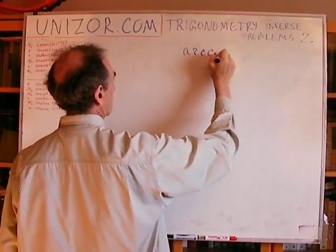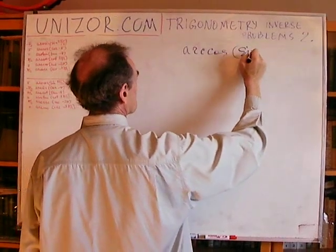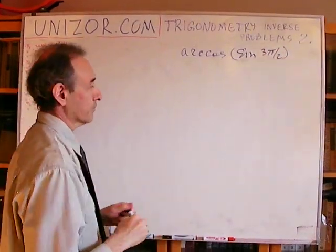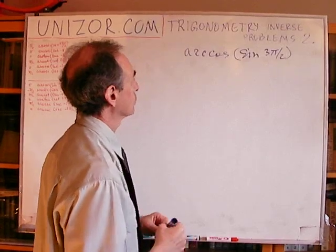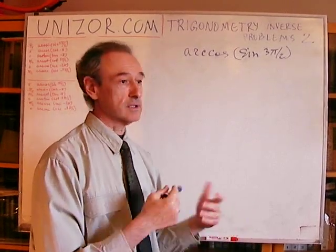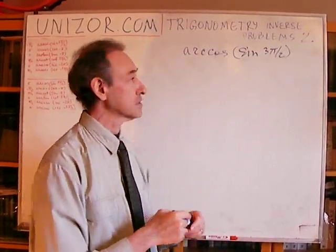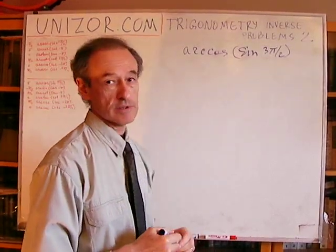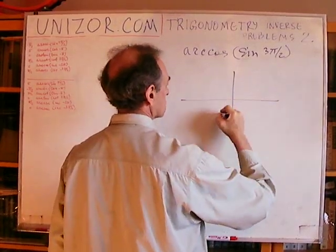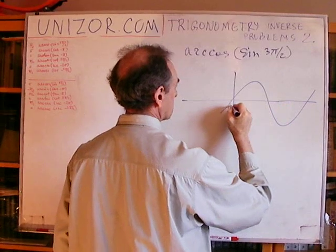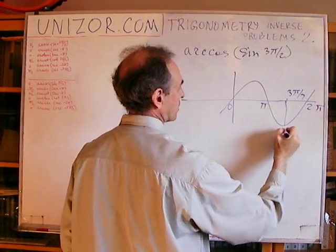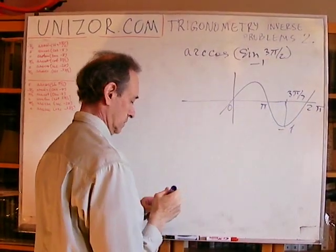Arc cosine of sine of 3π over 2. What we need right now is two functions: one function is sine, another function is cosine, and then we will have to inverse the cosine. First, let's evaluate sine of 3π/2. On the sine graph, 3π/2 is where the function is equal to minus 1. So, sine of 3π/2 is minus 1.